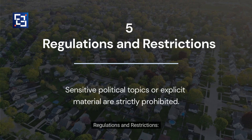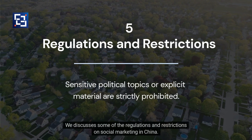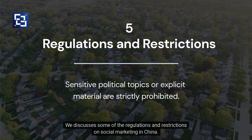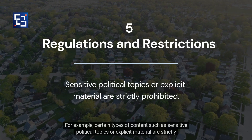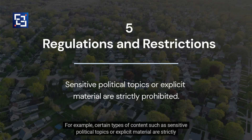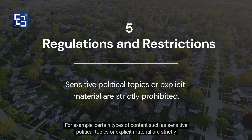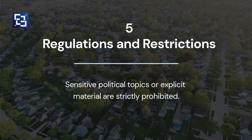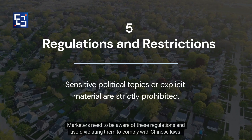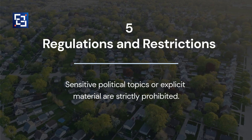Point 5: Regulations and restrictions. There are important regulations on social marketing in China. For example, certain types of content such as sensitive political topics or explicit material are strictly prohibited. Marketers need to be aware of these regulations and avoid violating them to comply with Chinese laws.